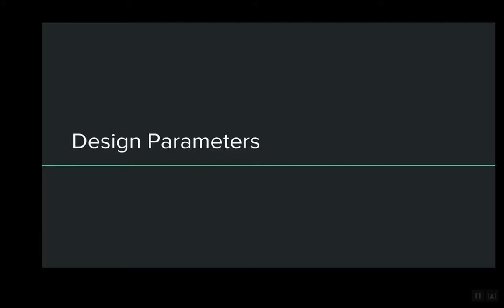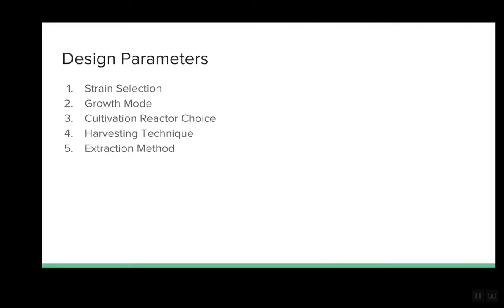Now we will talk about the several design parameters that need to be optimized to design the most efficient process. These design parameters include strain selection, growth mode, cultivation reactor choice, harvesting technique, and extraction method.